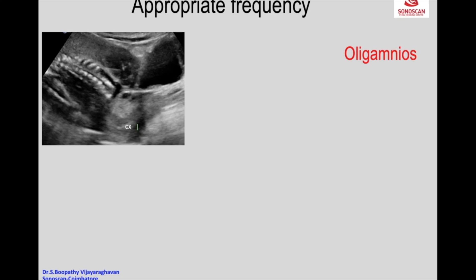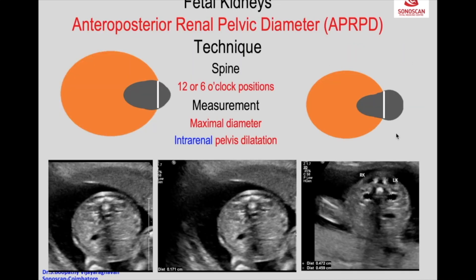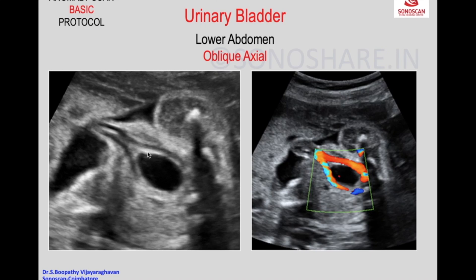This is an example using the endovaginal probe in a case of breech presentation. In a case of oligoamnios, you see there is no fluid; it is a breech presentation and the urinary bladder was not seen and balloons out. You should not measure the external pelvis — it should be measured where the pelvis exits. That is the correct technique of measuring the filled structure, with the umbilical arteries skirting around it. When you put on color Doppler, you see the two umbilical arteries skirting around the urinary bladder.